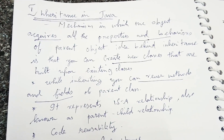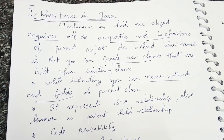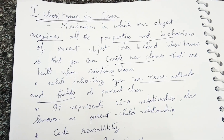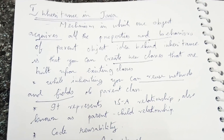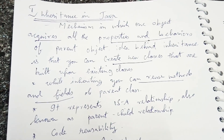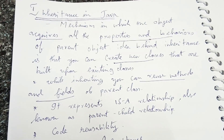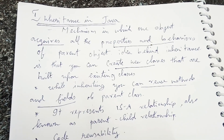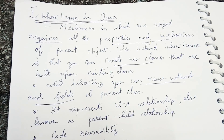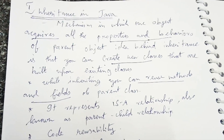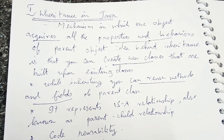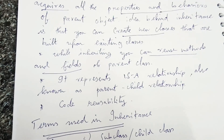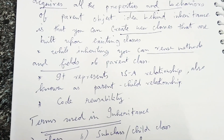In this concept we have two important objectives. The first is acquiring the properties and behaviors of an existing class using inheritance. The second is the ability to create a new class from an existing class. The terminology reusability comes from reusing the existing fields and methods of an existing class in a new class.